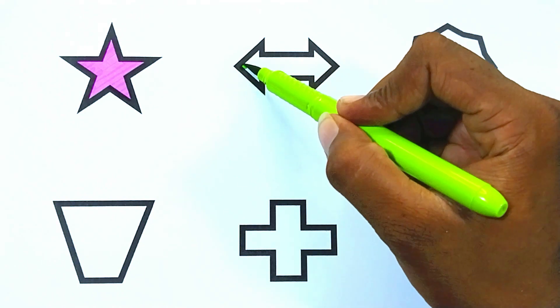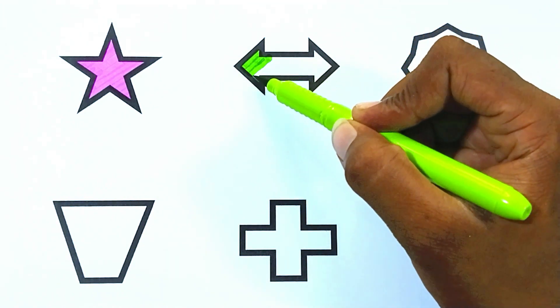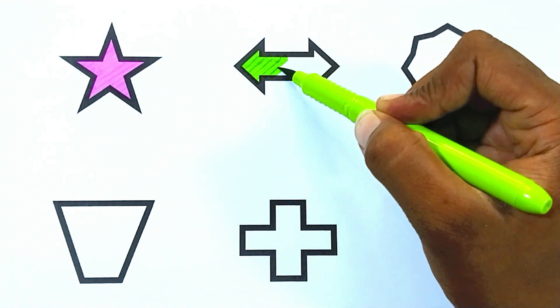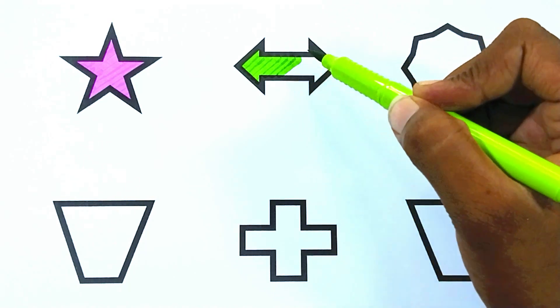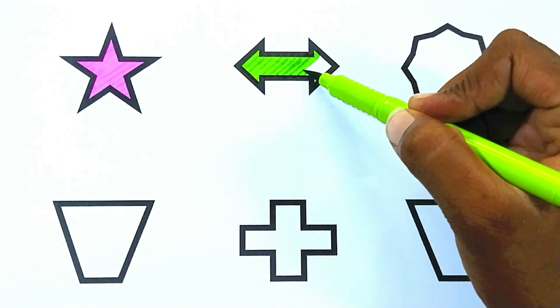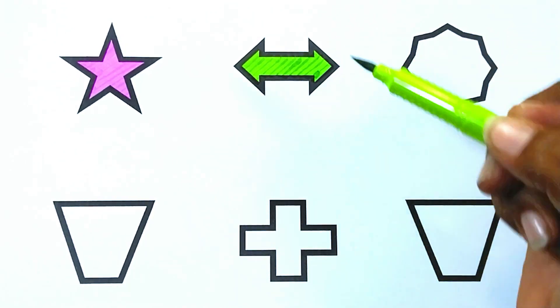Green color, double arrow. The shape is green color, double arrow.